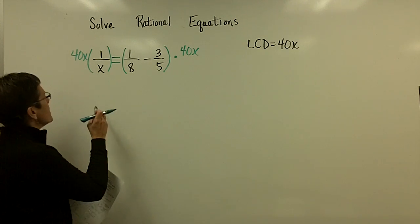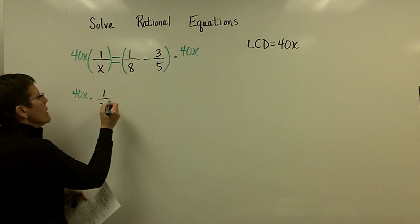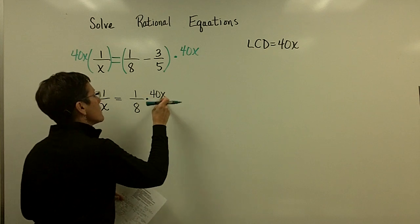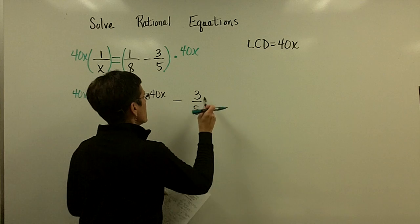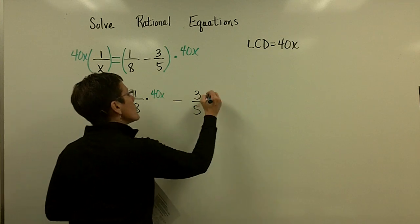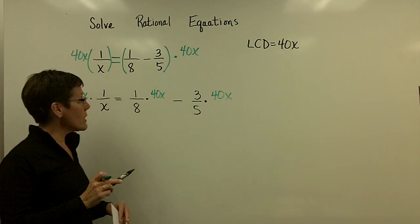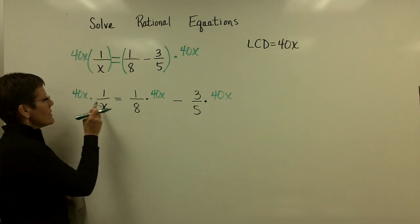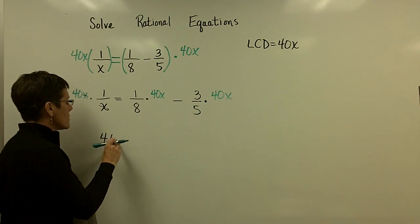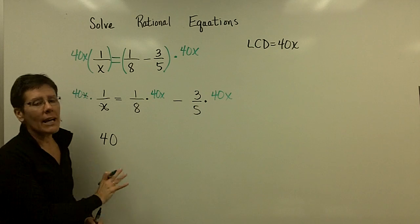It's best if I rewrite this a little bit. It's best if I write this as 1 over x, and it's going to be multiplied by the 40x. And then over here on the right side, the 1/8, I'm going to multiply it by the 40x. And then that minus 3/5, it's going to be multiplied by 40x. So really, I'm multiplying all terms by the 40x. And the reason I do that is because then the denominators can divide into that 40x. This x divides into that x and it's equal to 1. So this 1 gets multiplied by 40 and the denominator is gone.